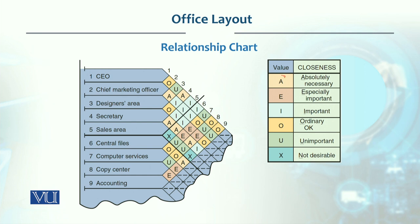For example, 'A' is given as absolutely necessary — meaning two areas must be very close to each other. 'E' is especially important, number two after absolutely necessary. Then we have important, ordinary importance, unimportant, and finally not desirable. When we make layout decisions, these ratings guide placement.